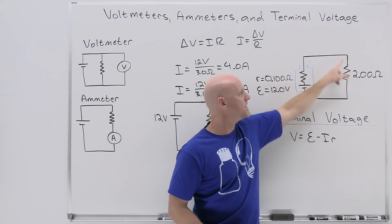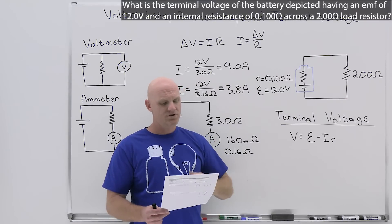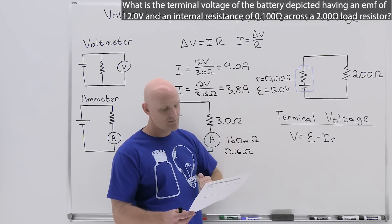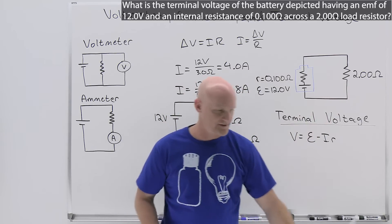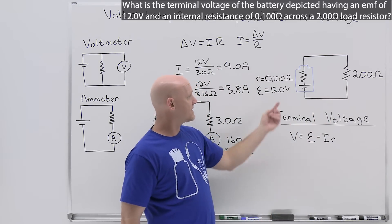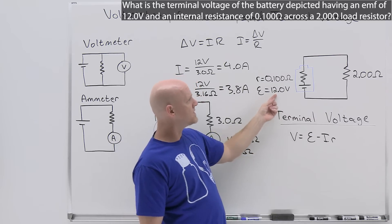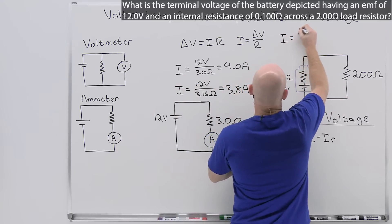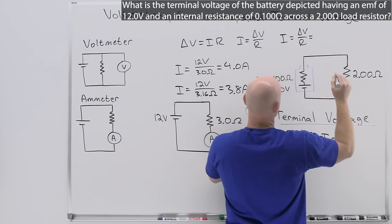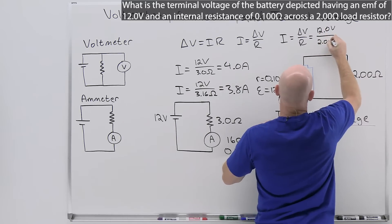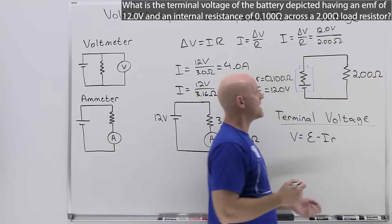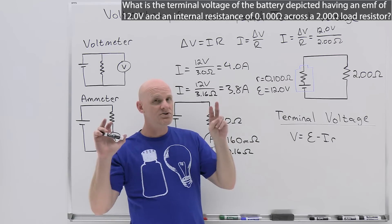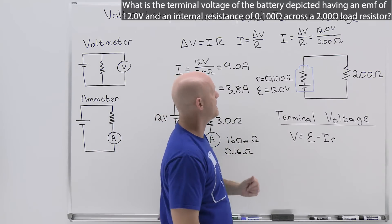The question reads: what is the terminal voltage of the battery depicted having an EMF of 12.0 volts and a resistance of 0.100 ohms across a 2.00 ohm load resistor? Ultimately, out of the 12 volt EMF, in the past, we would have just assumed all 12 volts was going to be the potential difference across the 2 ohm resistor. If we wanted to find the current in the circuit, we would have rearranged Ohm's law, delta V over R, and we would have just said 12.0 volts all over 2.00 ohms, and we would have gotten 6.00 amps for the current in the circuit. But we were ignoring that there was any contribution to this internal resistance of the battery.